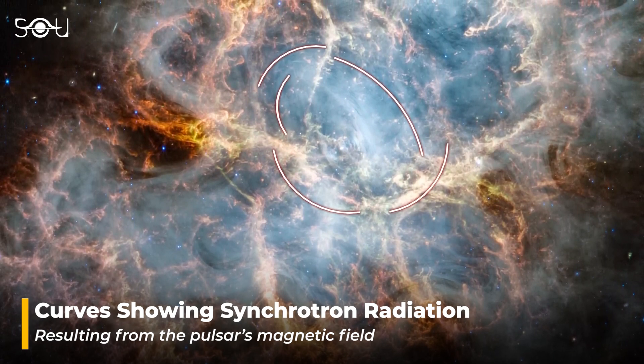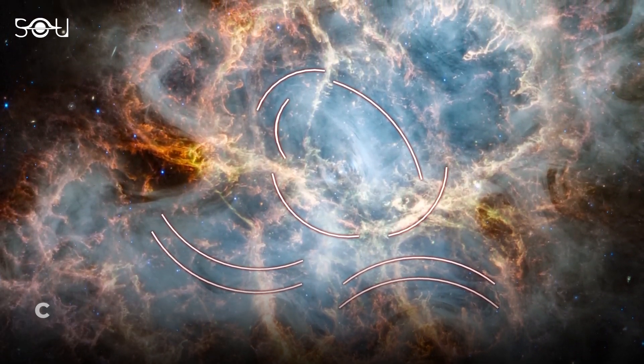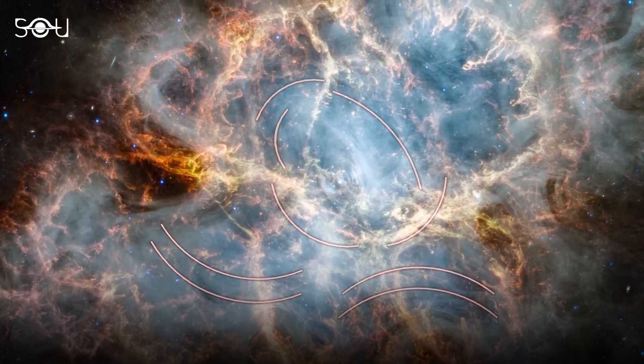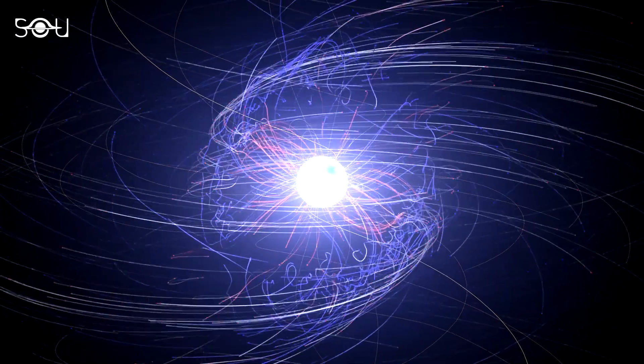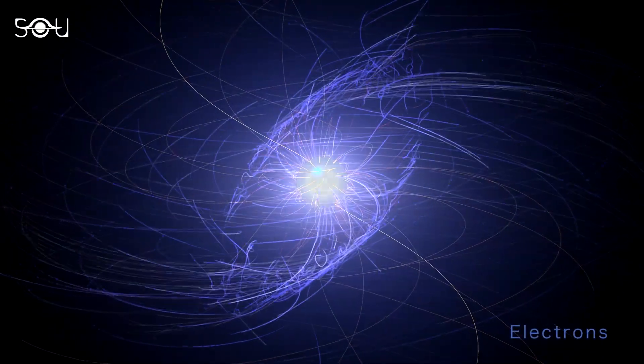This synchrotron radiation is a result of the nebula's pulsar, whose strong magnetic field accelerates particles to extremely high speeds. This causes them to emit radiation as they wind around the magnetic field lines.